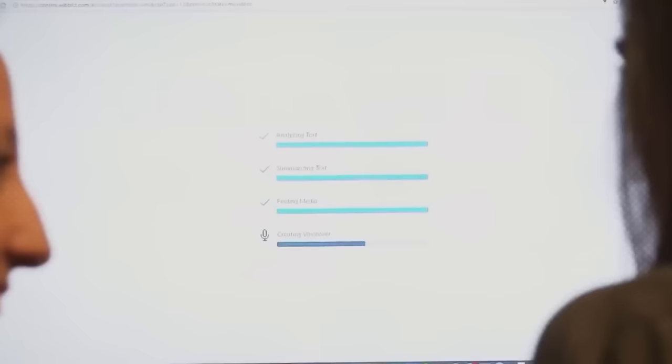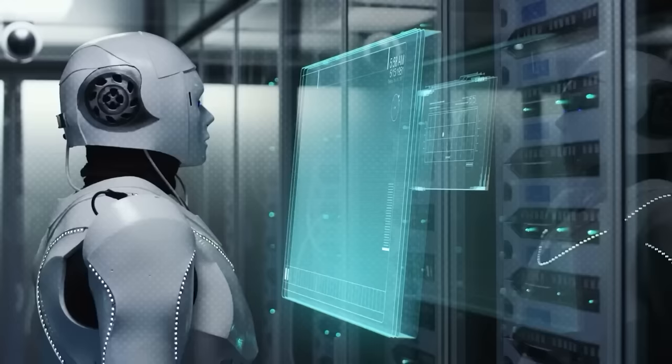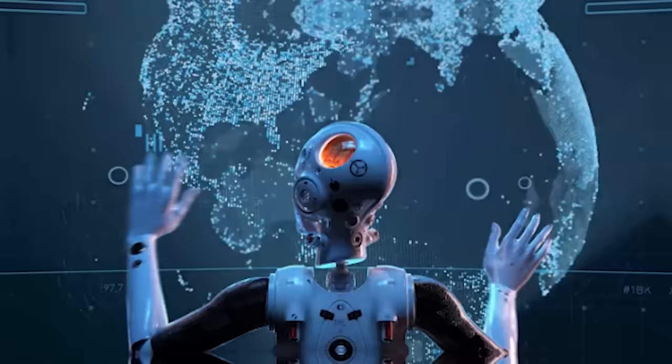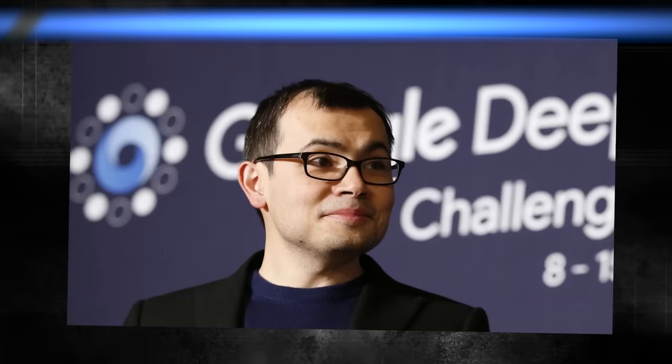Ever wondered who's behind the astonishing advancements in AI? The mind that taught machines to beat humans at their own games and unravel the secrets of life's building blocks? Meet Demis Hassabis, the AI prodigy who's striving to create a future where machines don't just understand our language, but also think and solve problems like us. So who is Demis Hassabis, and why should you care?